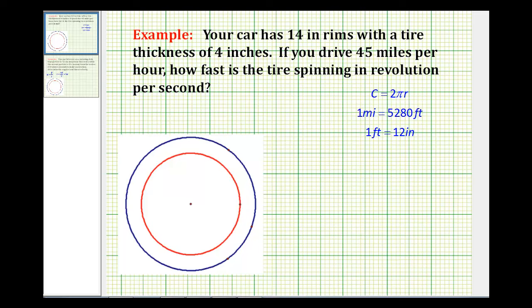In this example, we'll determine how fast a car tire is spinning in revolutions per second if a car is driving 45 miles per hour. Let's take a look at the information that we're given.